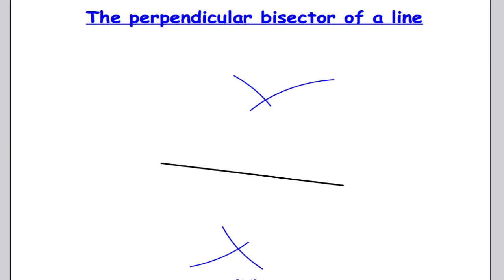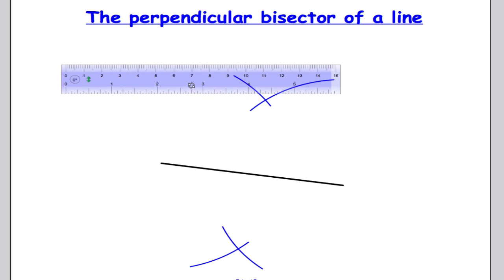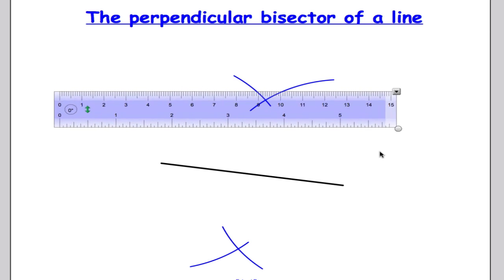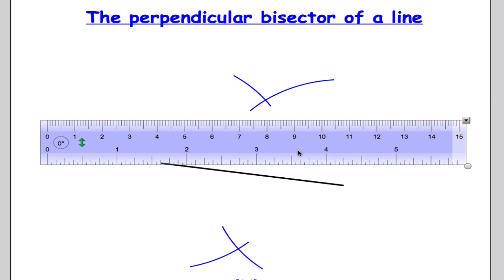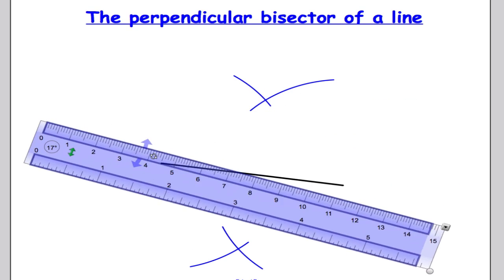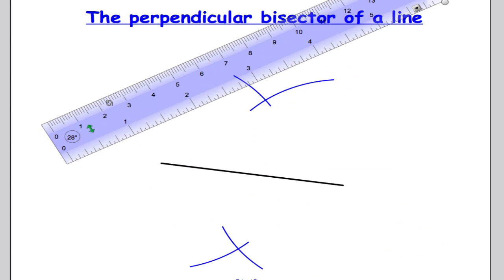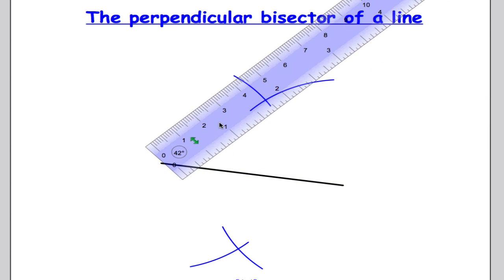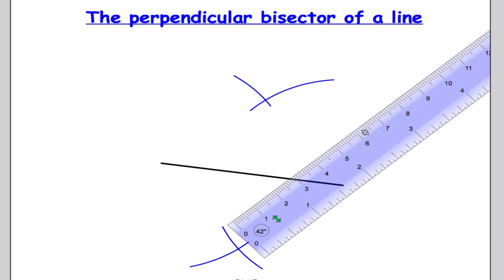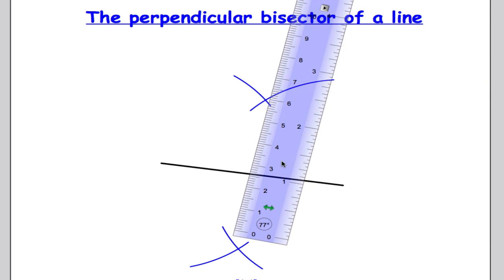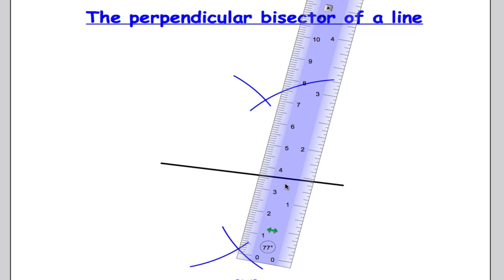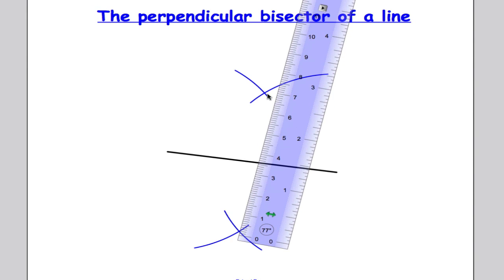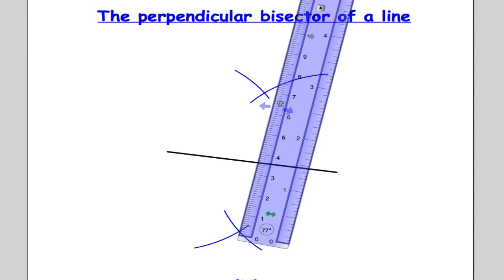And we're almost done. Last part. Take out your ruler. We want to draw a straight line through these two meeting points. So where the two arcs crossed, I'm going to draw a straight line through them.